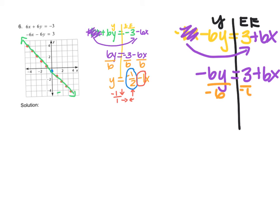To get y by itself, I need to divide everything by negative 6. These cancel, and I get y equals: 3 divided by negative 6 is negative one half, and positive 6 divided by negative 6 is negative 1x.